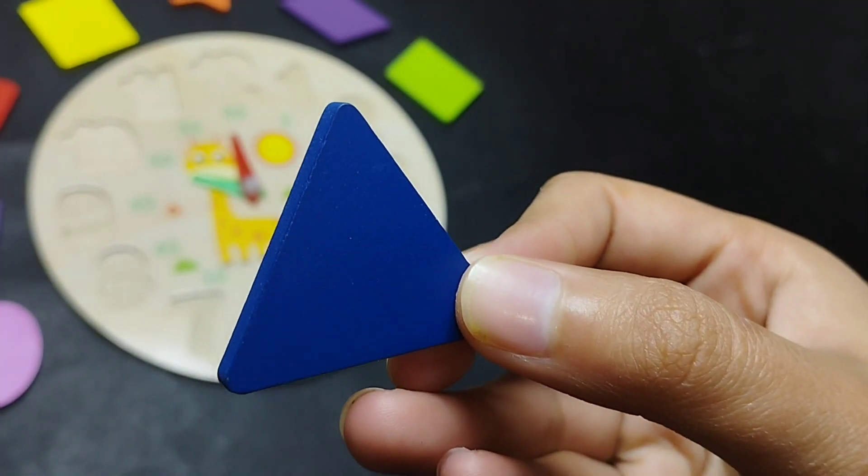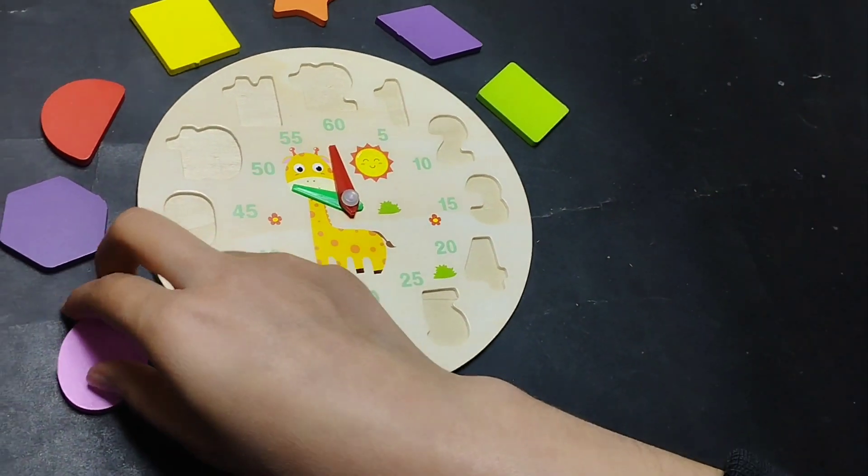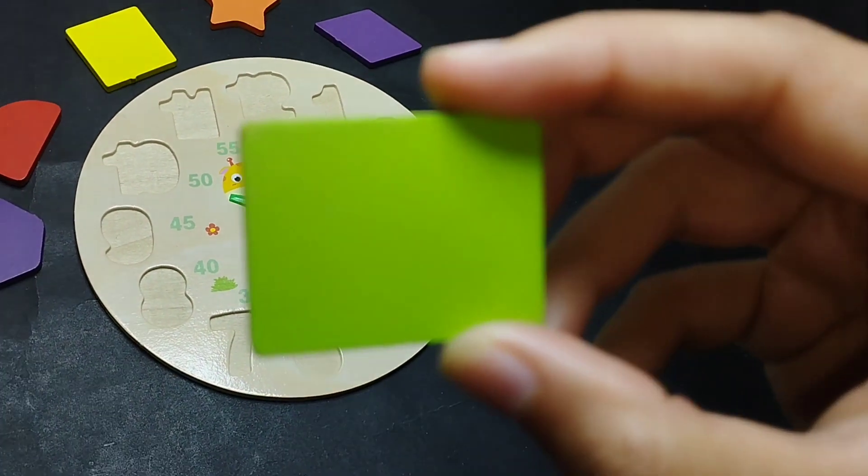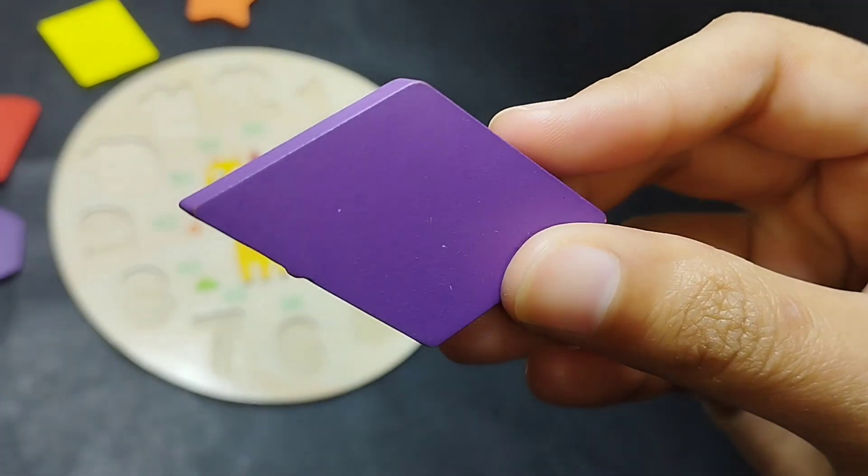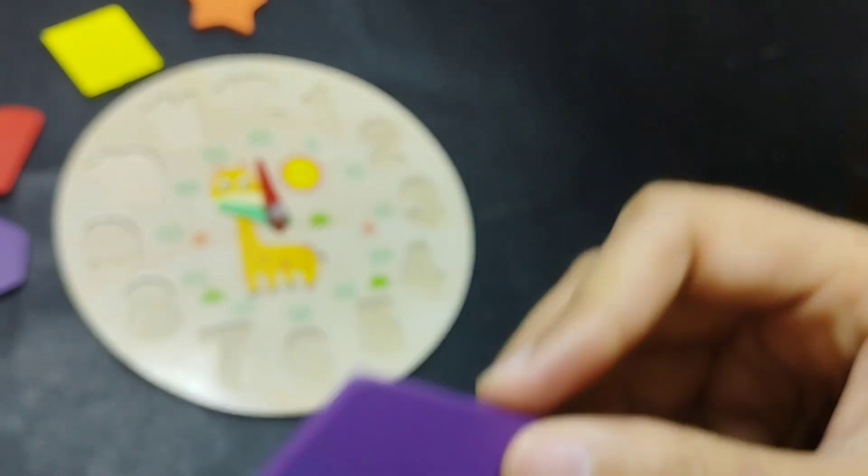This is triangle, triangle. This is oval, oval shape. Rectangle shape, rectangle. This is trapezium, trapezium.